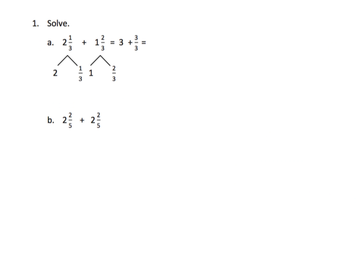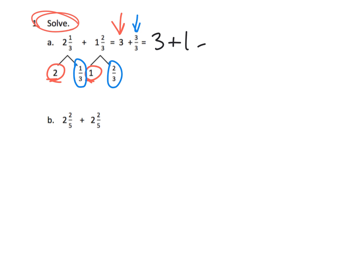We begin by showing students that to solve means we're going to look at these mixed numbers and understand that a mixed number can be decomposed as a whole number and a fraction. The whole numbers can be added together, and the fractions can be added together. One third plus two thirds gives us three thirds, and that equals three plus one, which is really four.